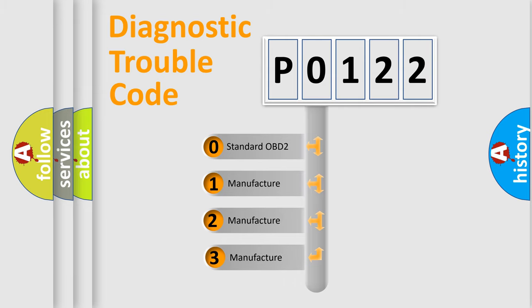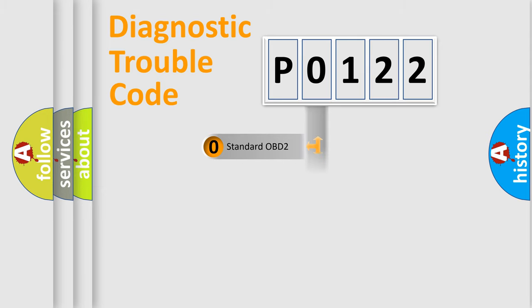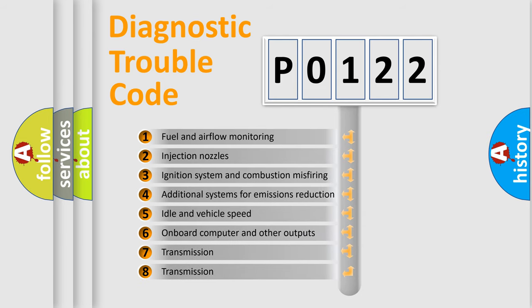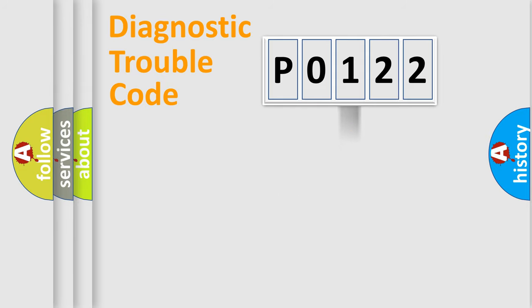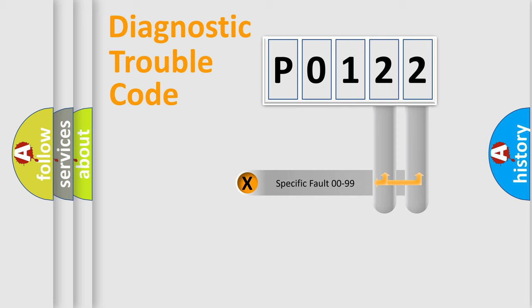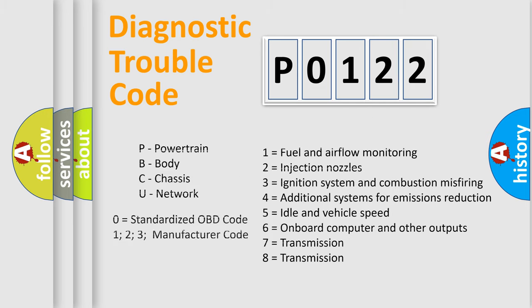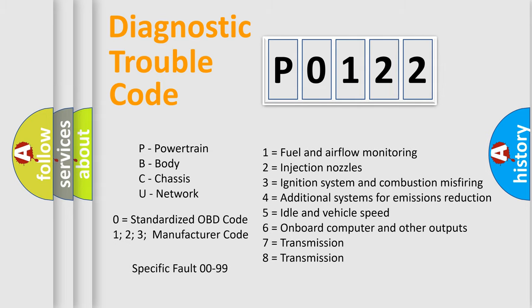If the second character is expressed as 0, it is a standardized error. In the case of numbers 1, 2, or 3, it is a manufacturer-specific error expression. The third character specifies a subset of errors. This distribution is valid only for the standardized DTC code, and only the last two characters define the specific fault of the group. This division is valid only when the second character code is expressed by the number 0.